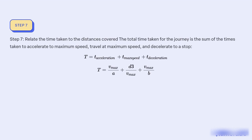Step 7: Relate the time taken to the distances covered. The total time taken for the journey is the sum of the times taken to accelerate to maximum speed, travel at maximum speed, and decelerate to a stop: t = t_acceleration + t_max_speed + t_deceleration, which equals v_max/a + d3/v_max + v_max/b.